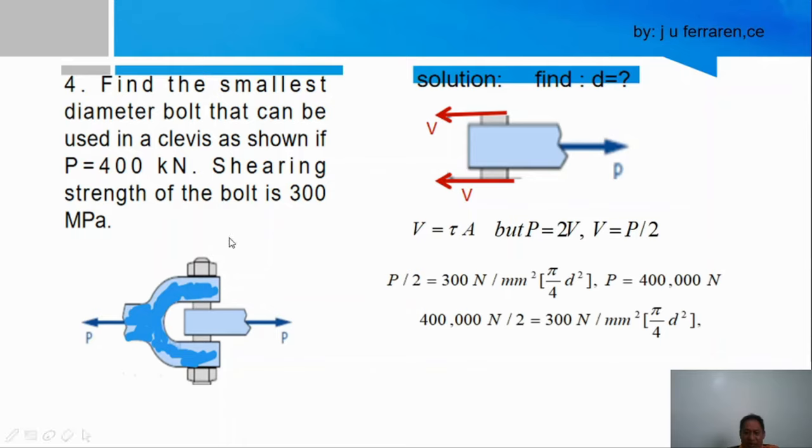So we can use V equals the product of the allowable shearing stress times the area. So P over 2 equals the allowable, which is 300 megapascal. I'll use megapascal as newton per millimeter squared. We have π d squared over 4. My P equals 400 kilonewton, which is 400,000 newton. I made it newton because my stress is now expressed as newton per square millimeter. P over 2, so 400,000 newton divided by 2 equals 300 megapascal times π over 4 times d squared. Simplifying, you arrive with d equals 29.13 mm.